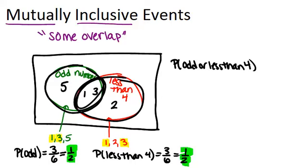One way to think about this is to just look and see how many possible numbers there are. We have 5, 1, 3, and 2. So there are 4 numbers out of the 6 that we have possibly when you roll a die.